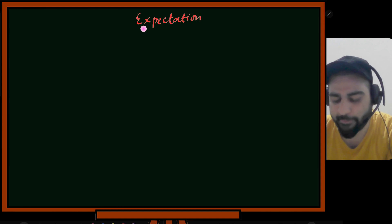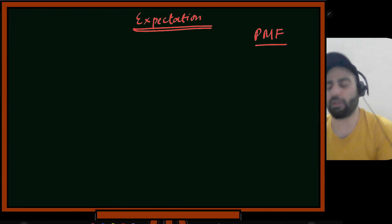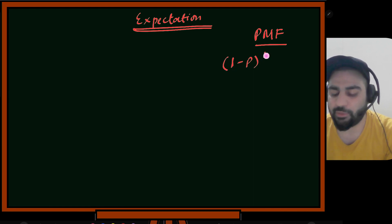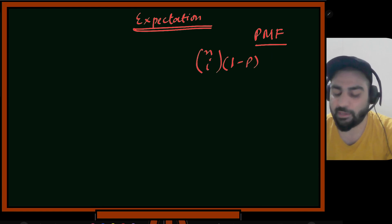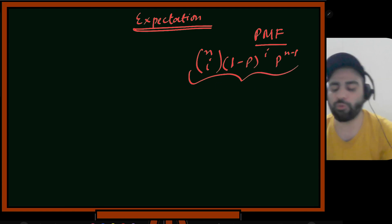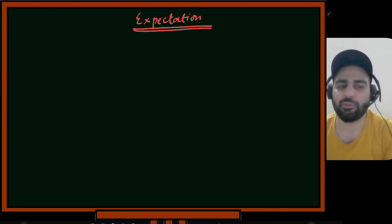A random variable and a distribution are somewhat different. A random variable is basically a function; a distribution gives you an idea of how the random variable behaves. Distributions give somewhat full information. But we also want some two or three summary numbers that give us enough knowledge about a random variable without needing the whole PMF.